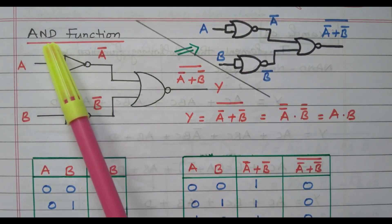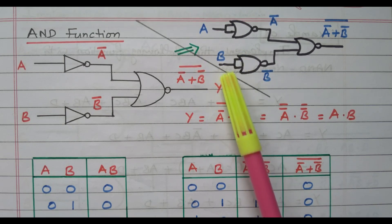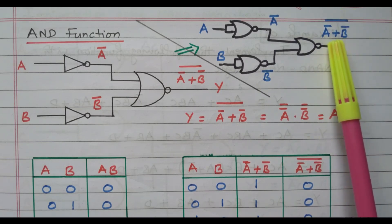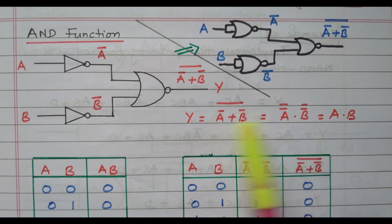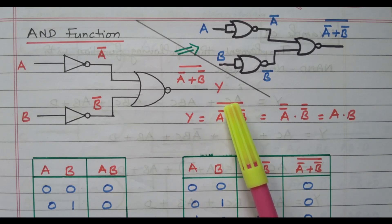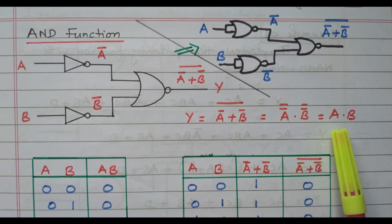We will verify whether we got the AND operation. The input A is given to both inputs of the first NOR gate — common input — giving A bar. Similarly B gives B bar. The output of the final NOR gate is A bar plus B bar, the whole bar. So Y equals A bar plus B bar, the whole bar. By De Morgan's theorem, A bar plus B bar whole bar equals A bar bar dot B bar bar, and the double bars cancel, giving us A dot B — the AND operation.